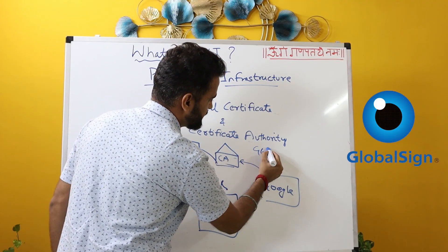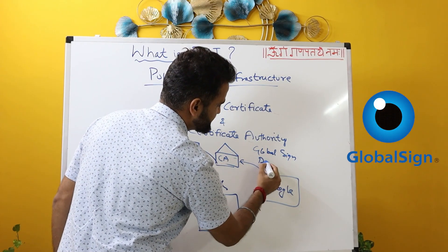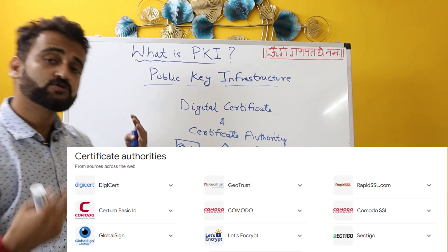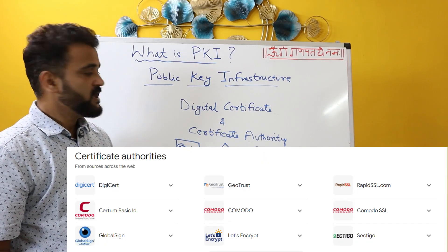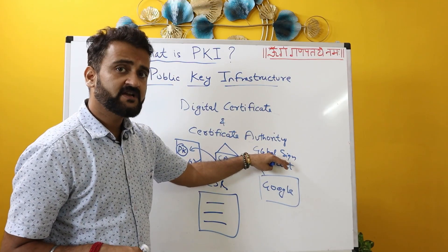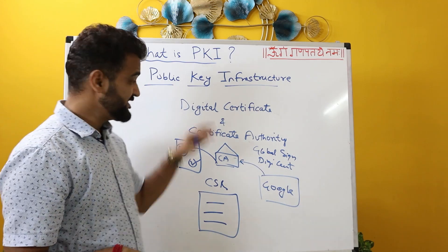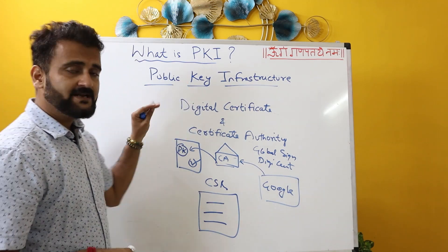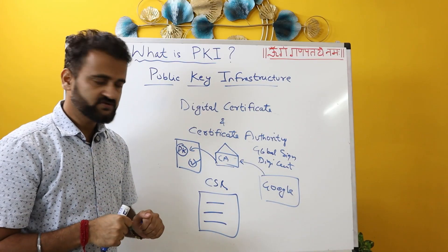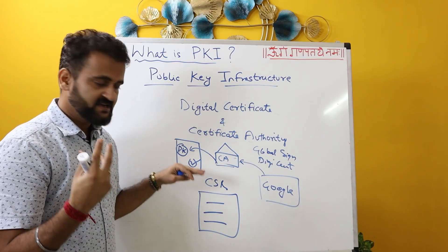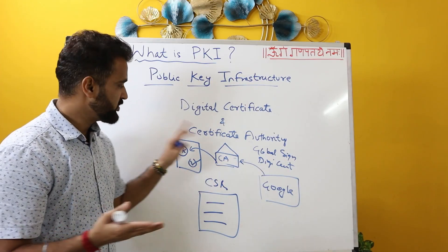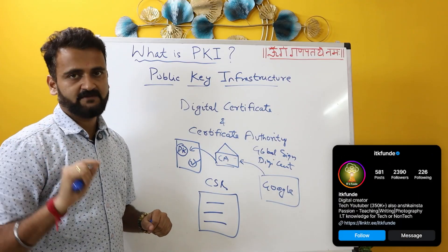You can procure a digital certificate by providing all this information and getting it from a certificate authority. Who runs these certificate authorities? There are companies — GlobalSign, DigiCert — and now Google and Amazon are also acting as their own certificate authorities, but these are the ones accepted globally. All these certificate authorities are registered authorities in your browser as well. A digital certificate is a stamp of authority that approves and legitimizes a particular source, and the certificate authority generates it, then signs it with the private key.